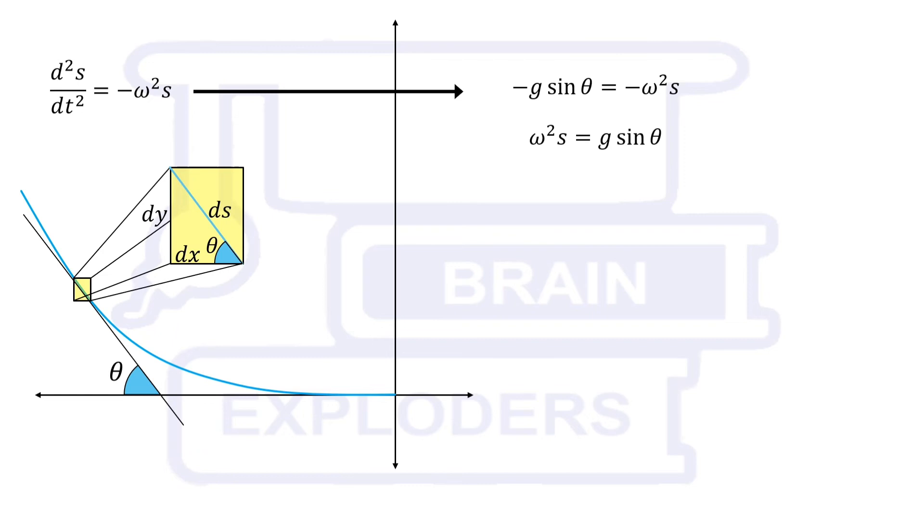Since theta is changing throughout the curve, acceleration also keeps changing. On differentiating this obtained equation, we get ds equals g over omega square times cos theta d theta.